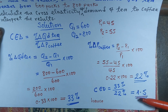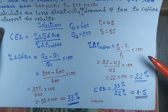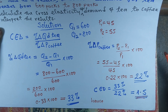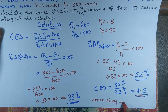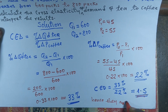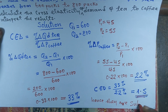A cross elasticity greater than 1 shows a strong relationship between coffee and tea, which means consumers can easily switch their consumption between tea and coffee. Hence, they are substitutes.